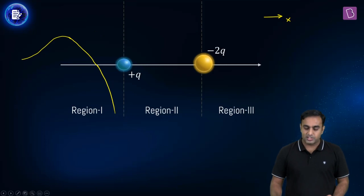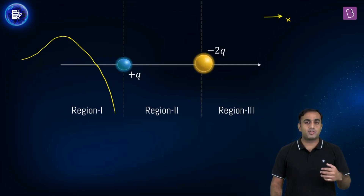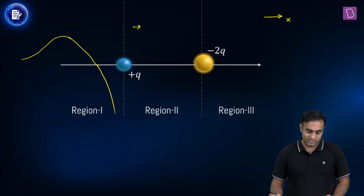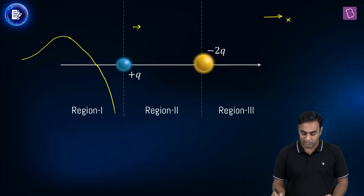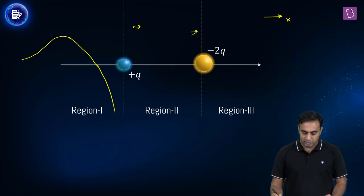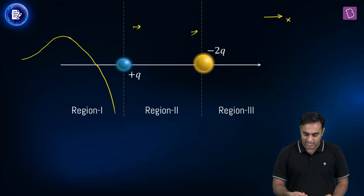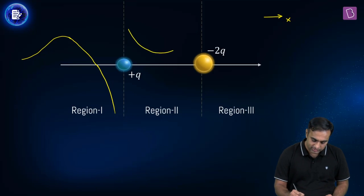In region two, between the charges, the field due to plus Q dominates near plus Q and points in the same direction as the field due to minus 2Q near minus 2Q — both point toward minus 2Q. The net field has a minimum somewhere in between, giving a characteristic dip in the variation curve.